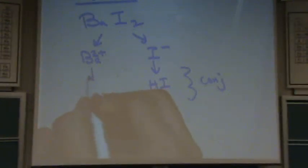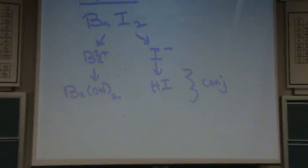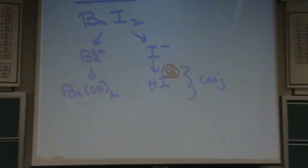So Ba two plus. So what I do is I write down here below the conjugates to help me realize this. So I would write HI is the conjugate of I minus. And the conjugate of barium is Ba(OH)₂. Okay. So HI, what is that? Strong acid. This is a strong acid.